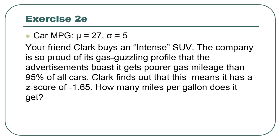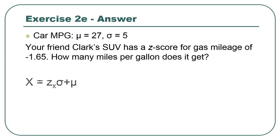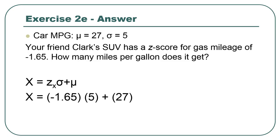Let's say your friend Clark buys an intense SUV. The company is so proud of it that it has poorer gas mileage than 95% of all cars. Clark figures out this means a z-score of negative 1.65. How many miles per gallon does a car get in this distribution — mean of 27, standard deviation of 5 — with a z-score of negative 1.65? We use the reverse z-score formula since we know the z. That gives us z times σ plus μ, which is (−1.65 × 5) + 27 = 18.75 miles per gallon.